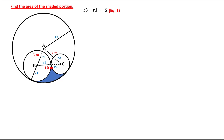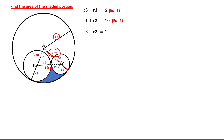To find the second equation, we have R1 plus R2 equals 10, and this is equation number 2. Then for the other equation, if we extend this line, it is equal to the radius of circle C, and this line is the radius of circle A.